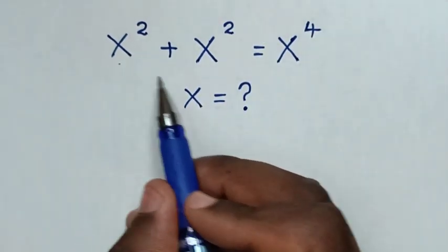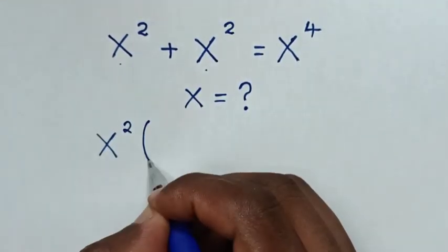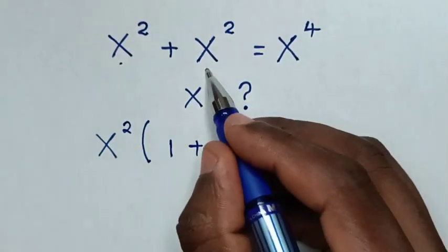From our equation, x² is common. So we take x² out of the bracket. Then this divided by this is 1, plus this divided by this